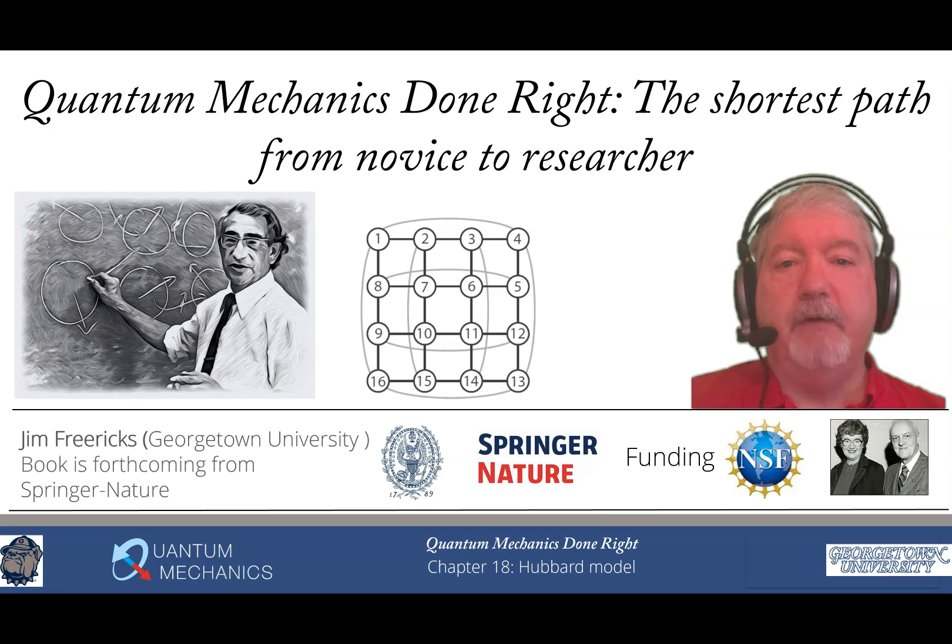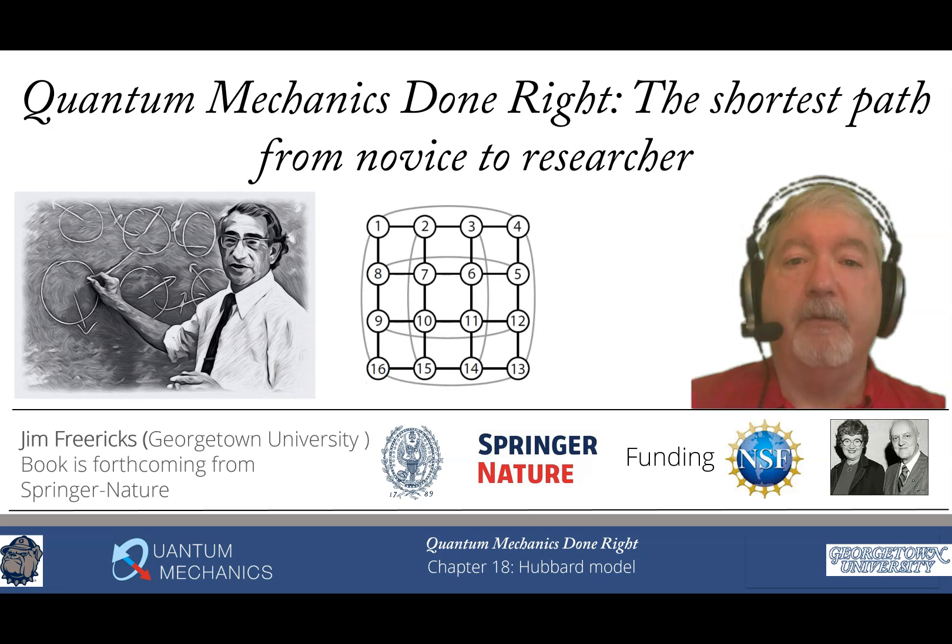The Hubbard model involves electrons that can hop from one site to another on a lattice, and when two electrons sit on the same site they feel a Coulomb repulsion given by U. It sounds like a simple model, but it has defied solution except in one dimension by the Bethe ansatz and in infinite dimensions by dynamical mean field theory. Both solutions are too complicated for us to put into the book, even though we've already talked about Bethe ansatz previously.